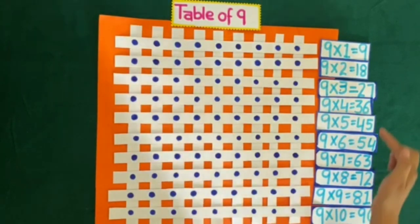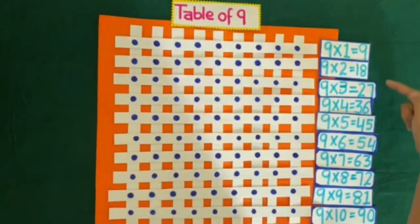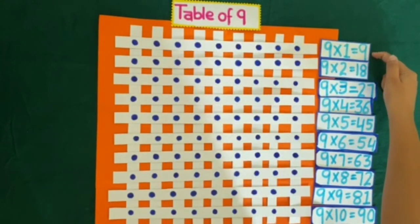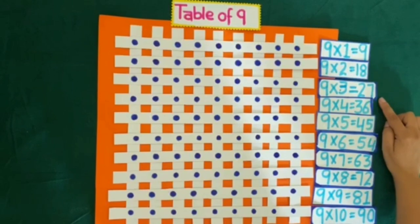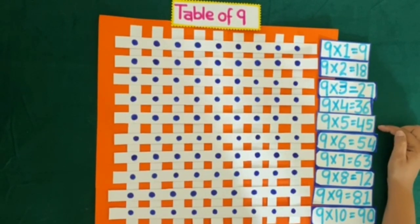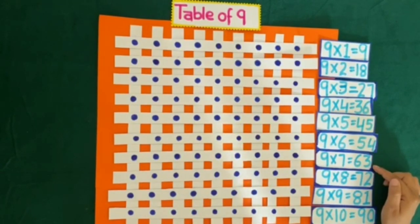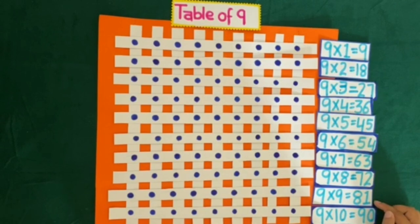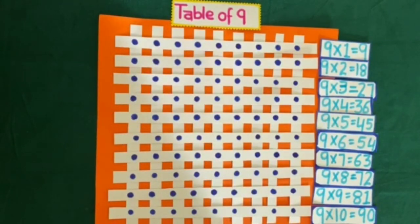So now revise table of 9 with me. 9 ones are 9. 9 twos are 18. 9 threes are 27. 9 fours are 36. 9 fives are 45. 9 sixes are 54. 9 sevens are 63. 9 eights are 72. 9 nines are 81. 9 tens are 90. Now hope you have understood the table of 9.